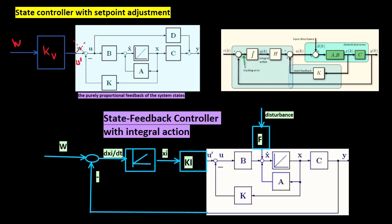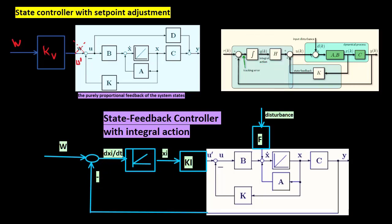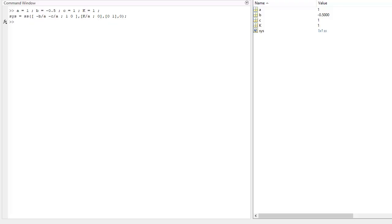And now, we can use the state feedback controller, but with integral action. For this, we consider now this plant Sys, with this transfer function, as a state space model.